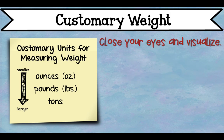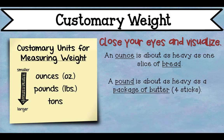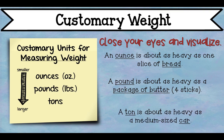Close your eyes and visualize what I read. An ounce is about as heavy as one slice of bread — we all know bread is not very heavy, so one slice is about an ounce. Several paperclips would also be about an ounce. A pound is about as heavy as a package of butter — about four sticks of butter is considered a pound. An iPad and a baseball are also about one pound each. A ton is about as heavy as a medium-sized car.